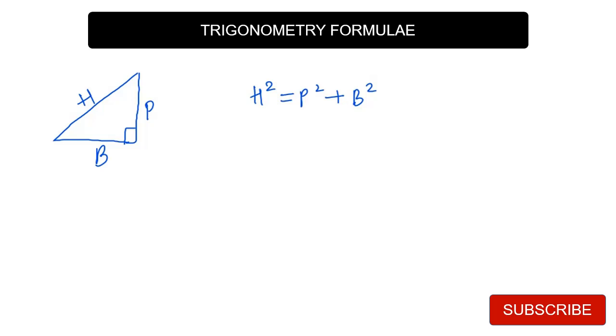It is hypotenuse square equals perpendicular square plus base square. This is the formula for Pythagoras theorem, and it is applicable for right-angled triangles. Now our properties are trigonometric ratios: sine, cos, tan, cot, cosec, sec. How do these depend on perpendicular, base, and hypotenuse? Let's say this is my angle theta.